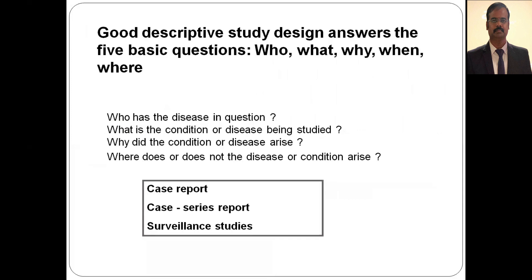A good descriptive study design answers the five basic questions: who has the disease, what is the disease, why did the condition arise, when or where does the disease arise. If you try to answer all these questions — including a sixth question, 'so what' — you can formulate a hypothesis at the end of the descriptive study.